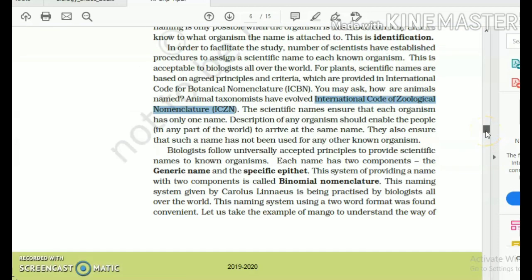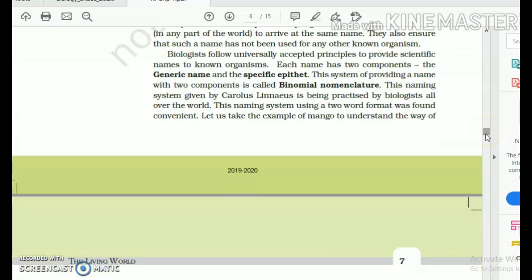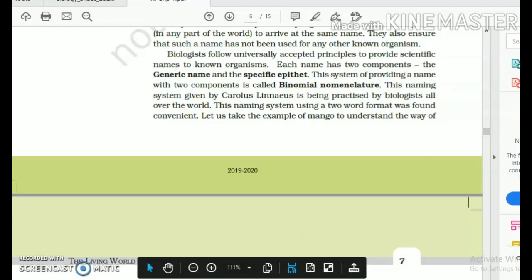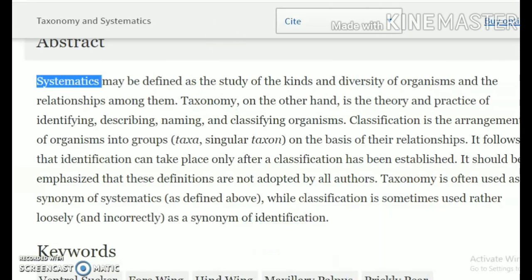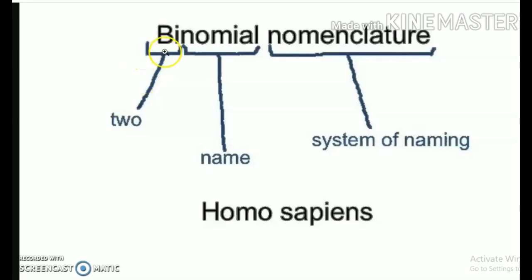Universal scientific names are awarded using a system introduced by Carlos Linnaeus, who was a Swede from Sweden. He gave the system of binomial nomenclature. 'Bi' means two, 'nomial' means name, and 'nomenclature' means system of naming.